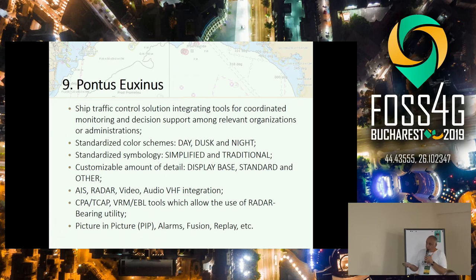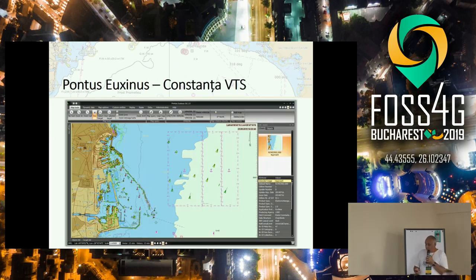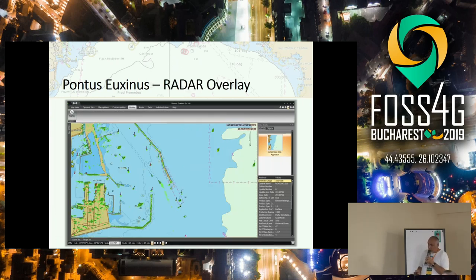Now I will show you the same software using a vessel management system — for example, controlling the traffic, what's happening in a port: entering, exiting. Here we see triangles representing all the vessels in Constanza Harbor. If they are green, they are moving; yellow means standing; and if it's red, it's carrying dangerous goods. And the same chart with radar data: you see the green information and with light green the trail — the history of the data.